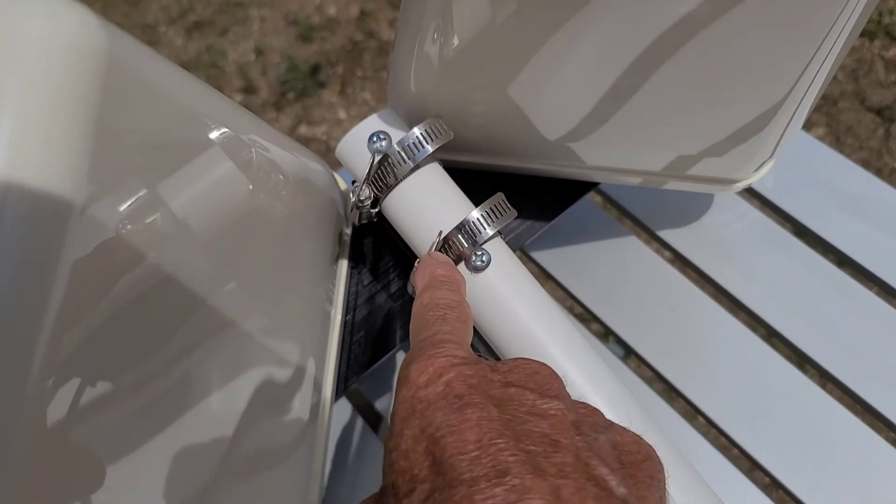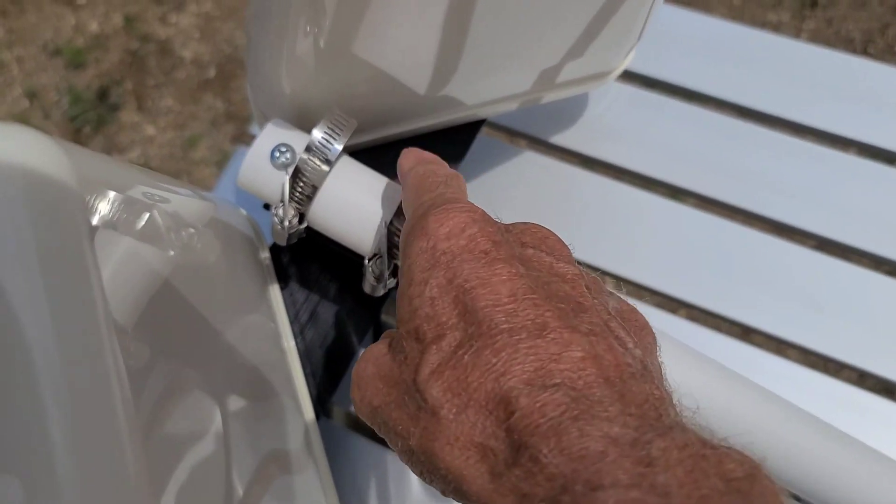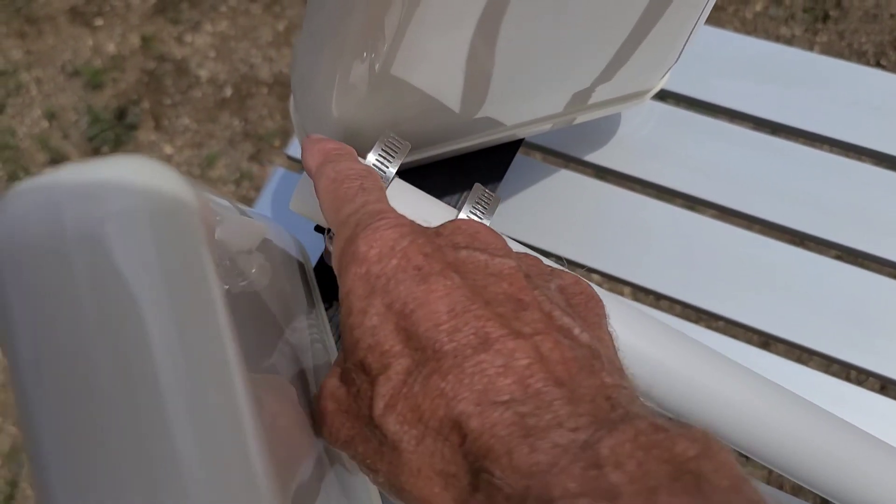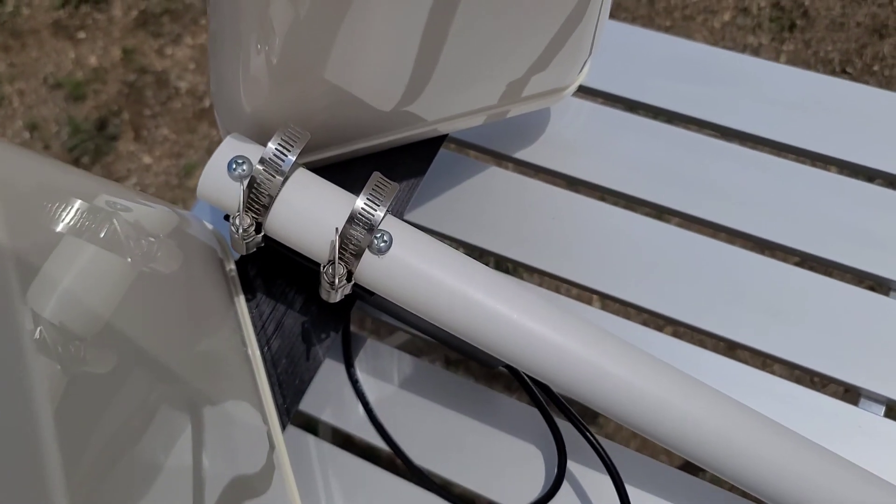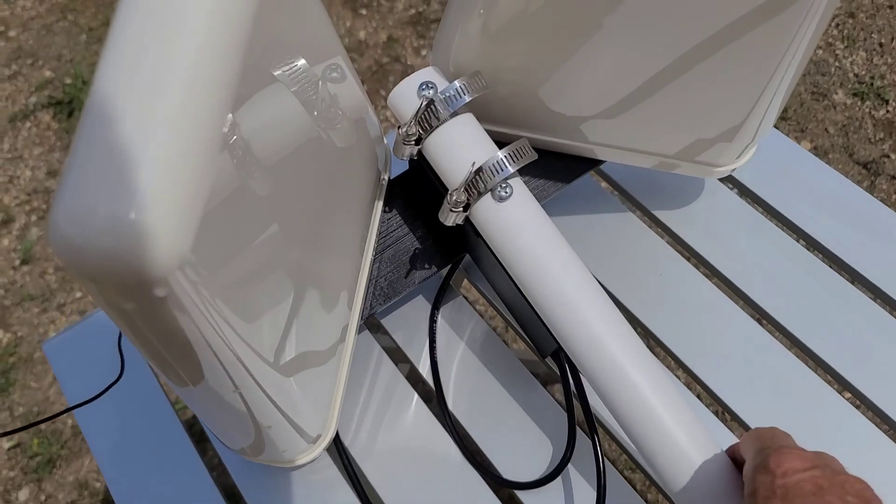You can see I'm using the same mounting system that I had the angel wings. I'm using the two stainless steel wing turn pipe clamps, and the screws are just to hold it so that even if these clamps should loosen up it won't slide down or blow up. It's just an extra protection precaution.